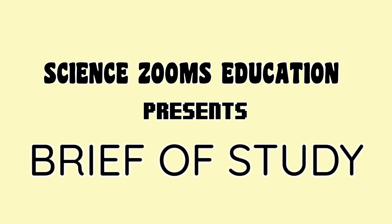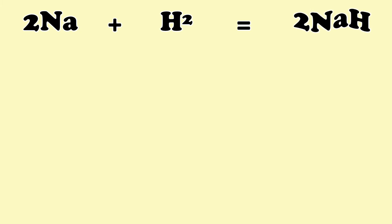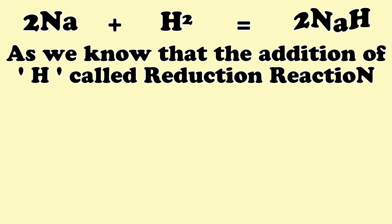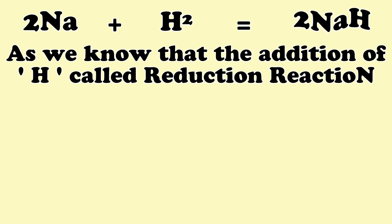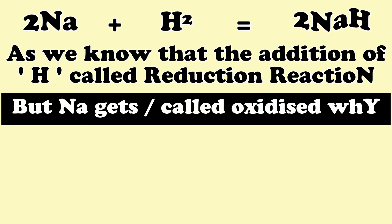When two sodium (Na) atoms react with hydrogen gas (H₂), they give two sodium hydride (NaH) molecules. As we know, the addition of hydrogen H is called a reduction reaction. But here, sodium Na is called oxidized in the above reaction. Why?